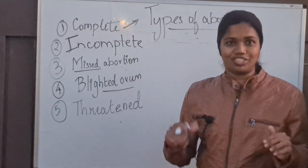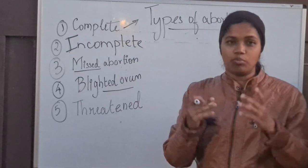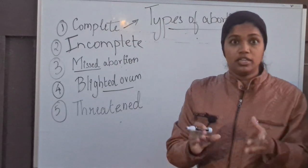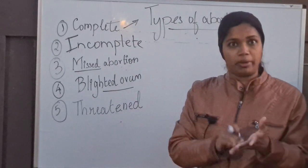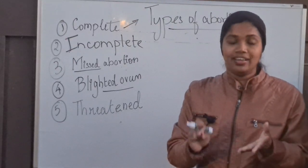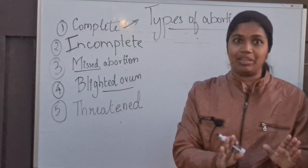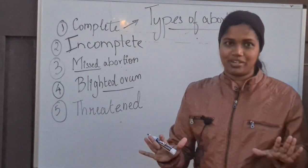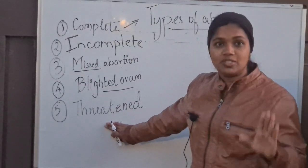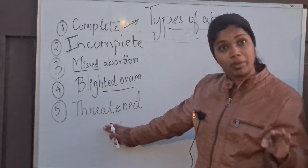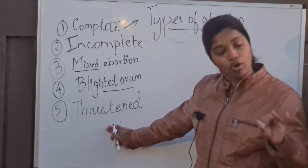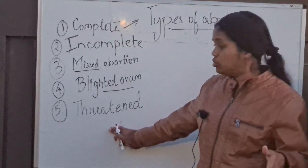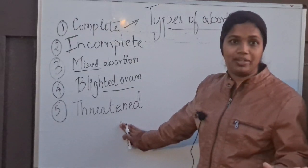Threatened abortion is when the body is threatening that it will abort, but has not yet aborted. The patient will come with severe bleeding with clots, but on ultrasound the fetus will still be viable. The treatment suggested so far is bed rest, though controversy still exists. So only in threatened abortion is the fetus still viable, even with the passage of severe bleeding and clots.